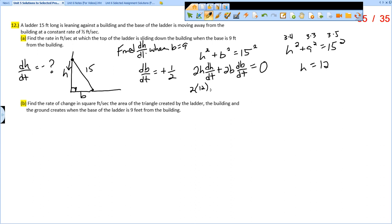So 2 times 12 times dH/dt, which is unknown, plus 2 times B, which is 9, times dB/dt, which is one-half, equals zero.